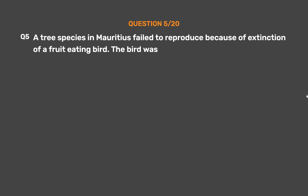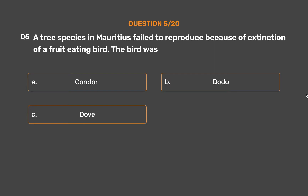Question number 5. A tree species in Mauritius failed to reproduce because of the extinction of a fruit-eating bird. The bird was. Option A: Condor. Option B: Dodo. Option C: Dove. Option D: Skewer. The correct answer is Option B: Dodo.